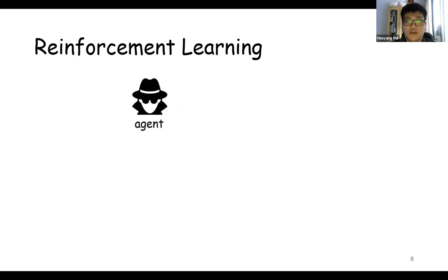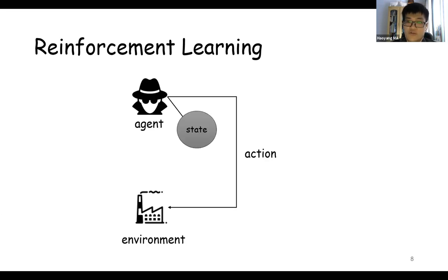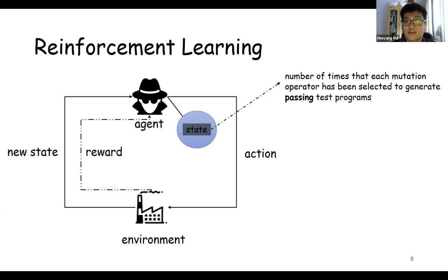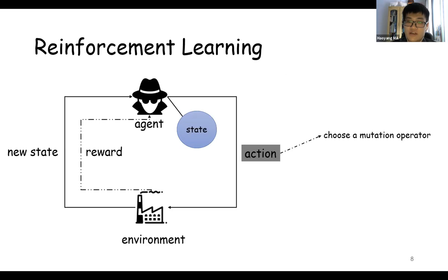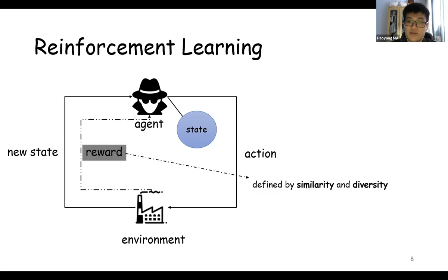We implemented the thinker and the thinking process with reinforcement learning. In reinforcement learning, we have an agent who acts like a thinker, and we have an environment which is like a workshop, a workplace for the agent to perform his or her action. An agent has some states, and in one state he can choose an action to perform. The environment will feedback a reward to evaluate this action. Besides, the environment will also return a new state for the agent to update his state. In our paper, the state means the number of times that each mutation operator has been selected to generate passing test programs. Action means choosing a mutation operator. Reward here is the key. It is defined by similarity and diversity.